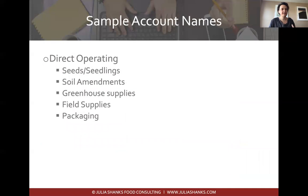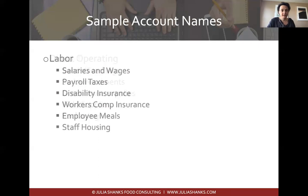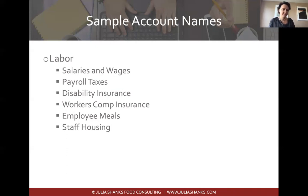When you set up your accounts, think about the bucket names that make sense for you. Examples of direct operating expenses might be seeds and seedlings, soil amendments, and greenhouse supplies. Examples of labor accounts would be salaries and wages, payroll taxes, employee meals, employee benefits, or staff housing — for example if you have an H-2A worker and need to provide housing, or if you have interns you feed and house, that's a direct cost of having employees even without paying a salary.